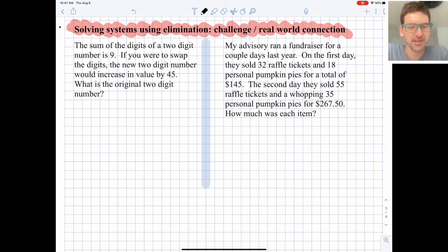So our first challenge problem on the left here is the sum of the digits of a two-digit number is 9. And if you were to swap the digits, the new two-digit number would increase in value by 45. So what's the original two-digit number?